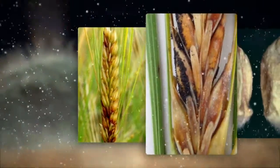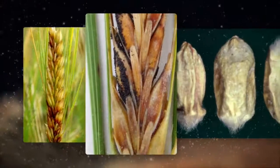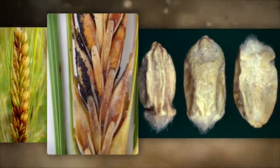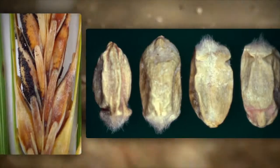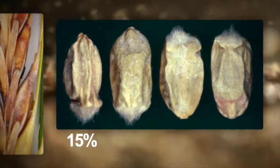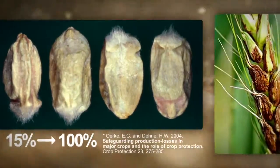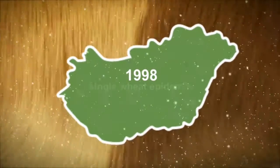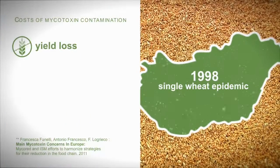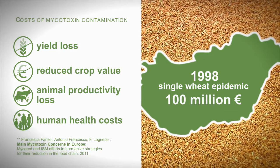Mycotoxin producing fungi, or crop mold, are known to contaminate food and feed crops. Toxic contamination is responsible for an average of 15% yearly crop loss, but for individual crops fungal losses can reach a hundred percent. In 1998, direct and indirect losses through a single wheat epidemic in Hungary alone were estimated to be up to a hundred million euros.